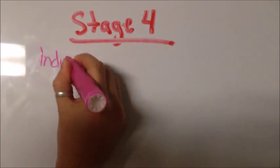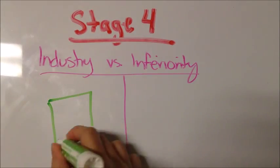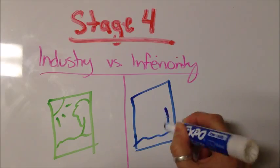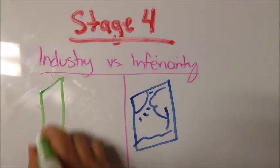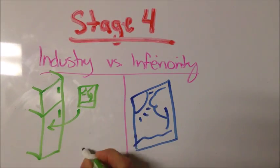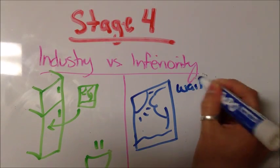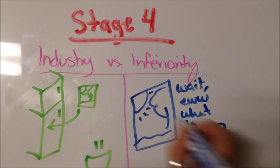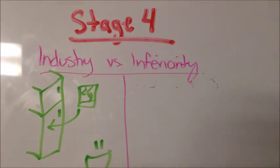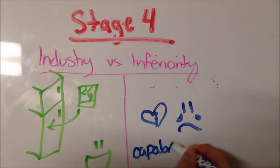Stage 4, Industry versus Inferiority. This stage occurs during elementary school when children are producing things such as drawings. If their work is praised or encouraged, children begin to demonstrate industry and become diligent. If their work is incapable of meeting others' expectations, then they begin to believe their capabilities are inferior.